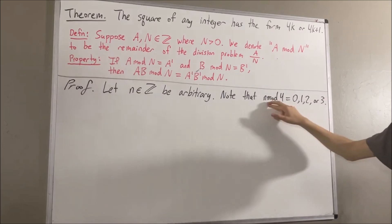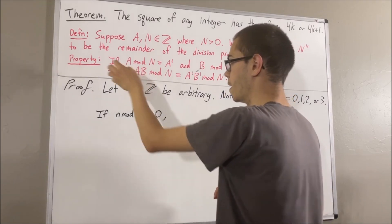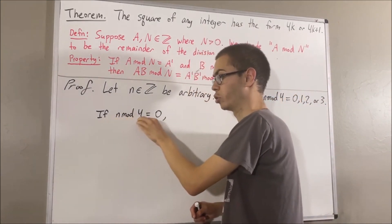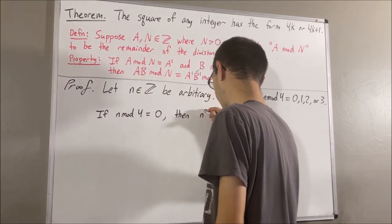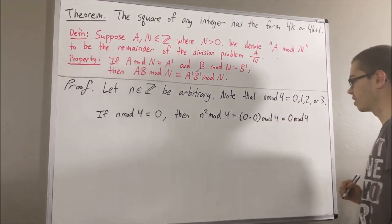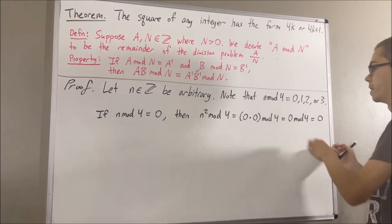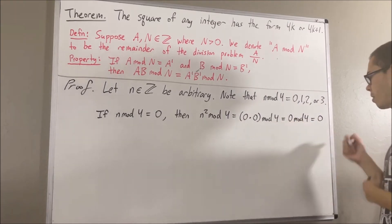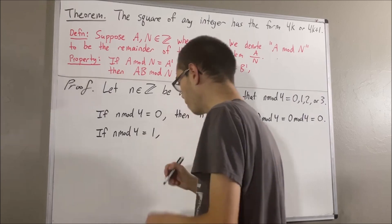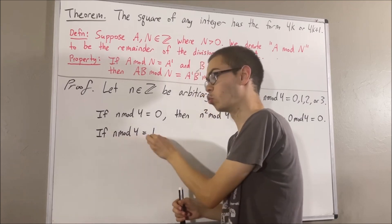Let's start with the case where n mod 4 is equal to 0. Applying our property, n times n mod 4 equals 0 times 0 mod 4. Zero times zero is 0, and the remainder of 0 divided by 4 is 0, because 0 is divisible by 4. Now for the case where n mod 4 is equal to 1: applying the property again, n times n mod 4 equals 1 times 1 mod 4, which equals 1.